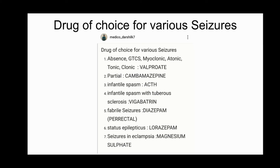For partial seizures, the drug used is carbamazepine. For infantile spasm, the drug used is ACTH. For infantile spasm with tuberous sclerosis, the drug used is vigabatrin. Vigabatrin is a GABA transaminase inhibitor — in the name: GABA means GABA, TR means transaminase, IN means inhibitor.